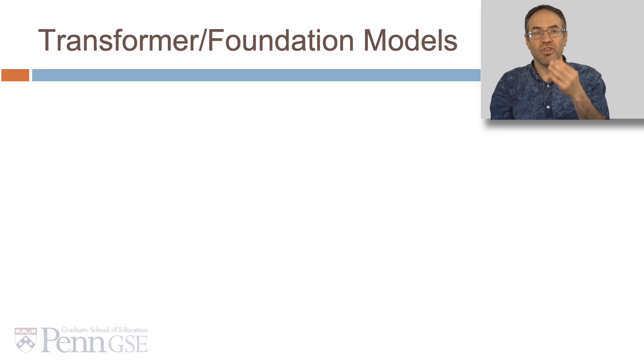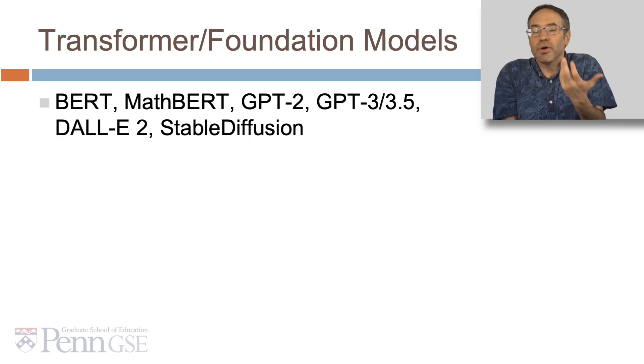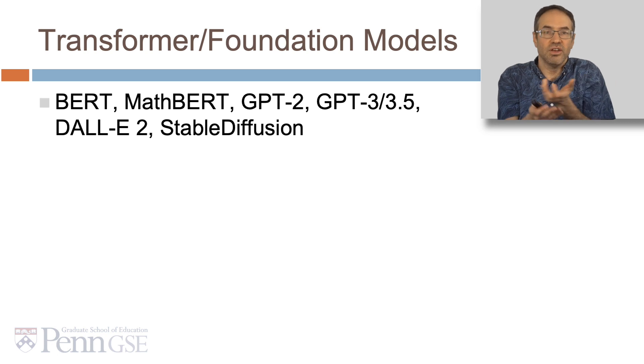Deep learning has led, in turn, to what are called sometimes transformer models or foundation models. Examples of this include BERT, Mathpert, the GPT family, ChatGPT, DALI, Stable Diffusion. You've no doubt heard of some of these.